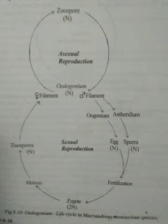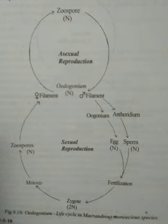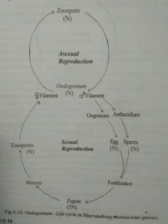The sexual reproduction of Oedogonium is of the oogamous type. The male sex organ is called the antheridium, and the female sex organ is called the oogonium. The oogonium contains a haploid egg. You can see in the figure the Oedogonium filament bearing oogonia and antheridia. The oogonium produces an egg and the antheridium produces sperm.